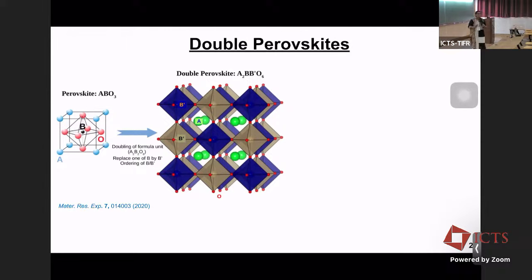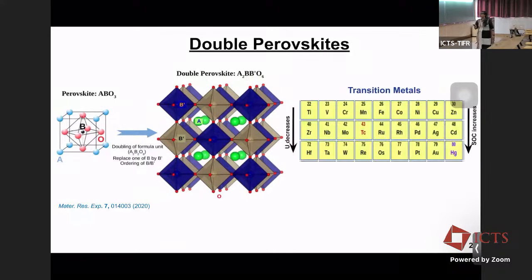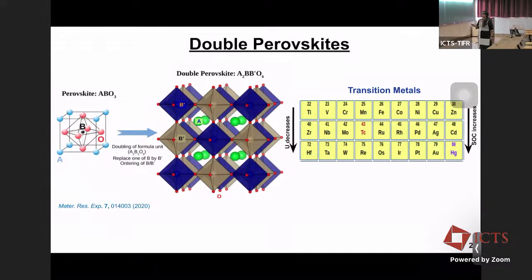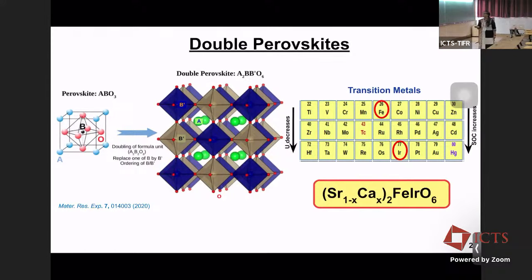By having two different series of transition metals we can incorporate two different energetics into the system. As I move down the periodic table, electronic correlation U decreases whereas spin-orbit coupling strength increases. Especially in the regime of 5D elements such as iridium and osmium, U and SOC are on an equal footing. The compound we were working on is a series — strontium-calcium FeIrO6 double perovskite.